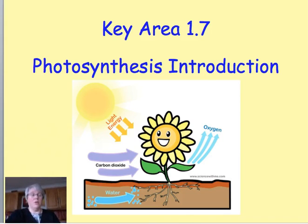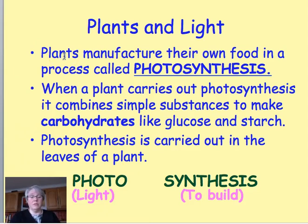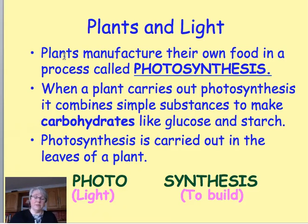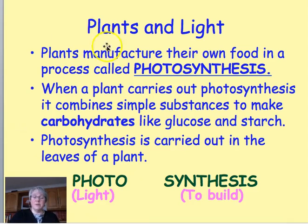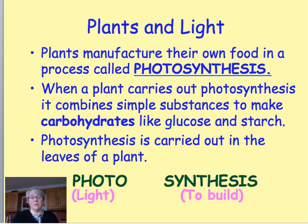A wee bit of a recap of what you probably already know. You probably already know that plants make food from light, and that process is called photosynthesis. What the plant is doing is combining simple substances to make carbohydrates, such as glucose, and then the glucose gets joined together and made into a larger molecule called starch. Photosynthesis is carried out in the leaves of a plant. The word breaks down into 'photo' for light and 'synthesis' meaning to build up — so photosynthesis is the process of using light to build up glucose.